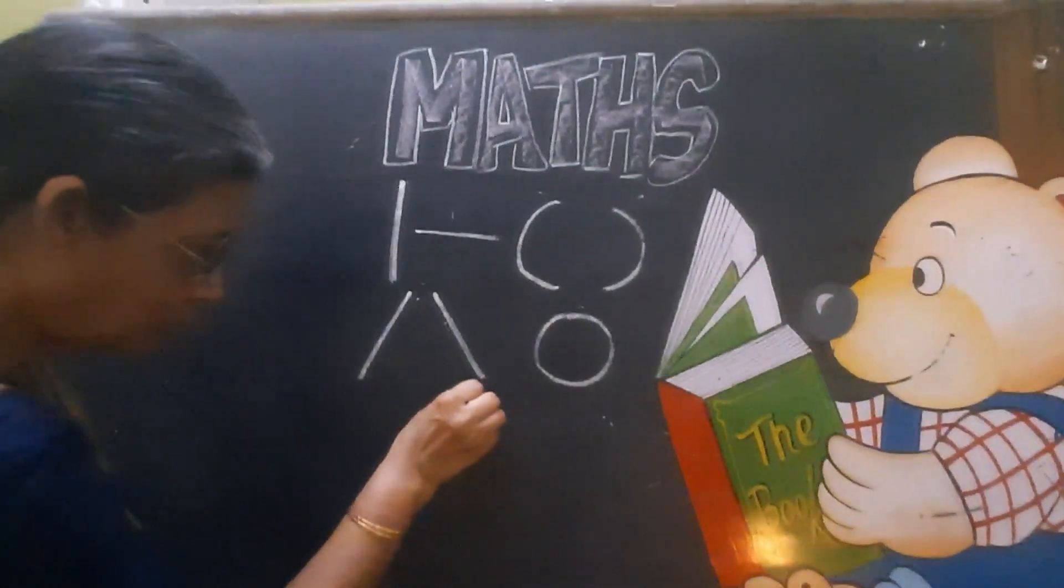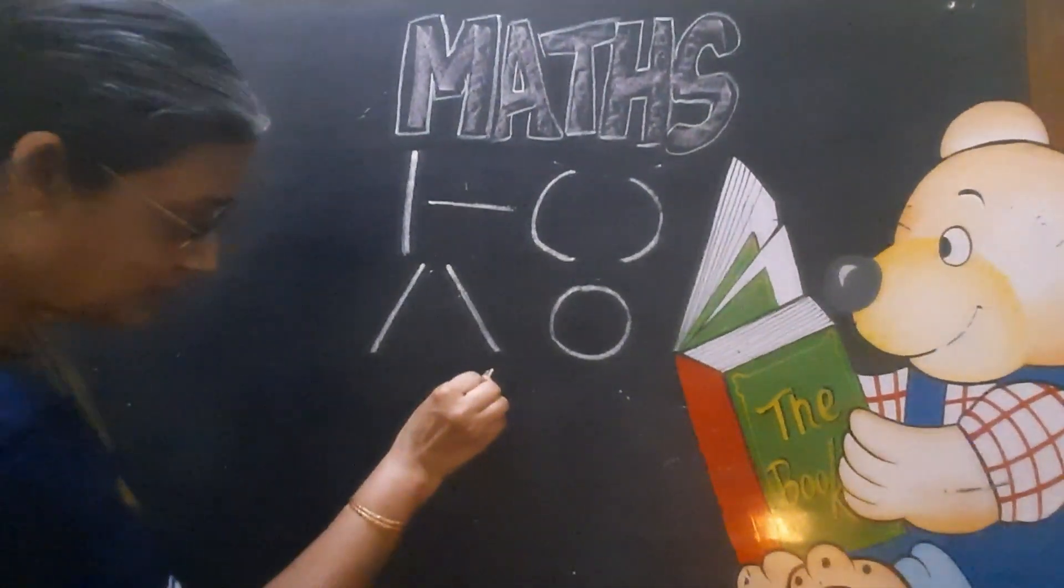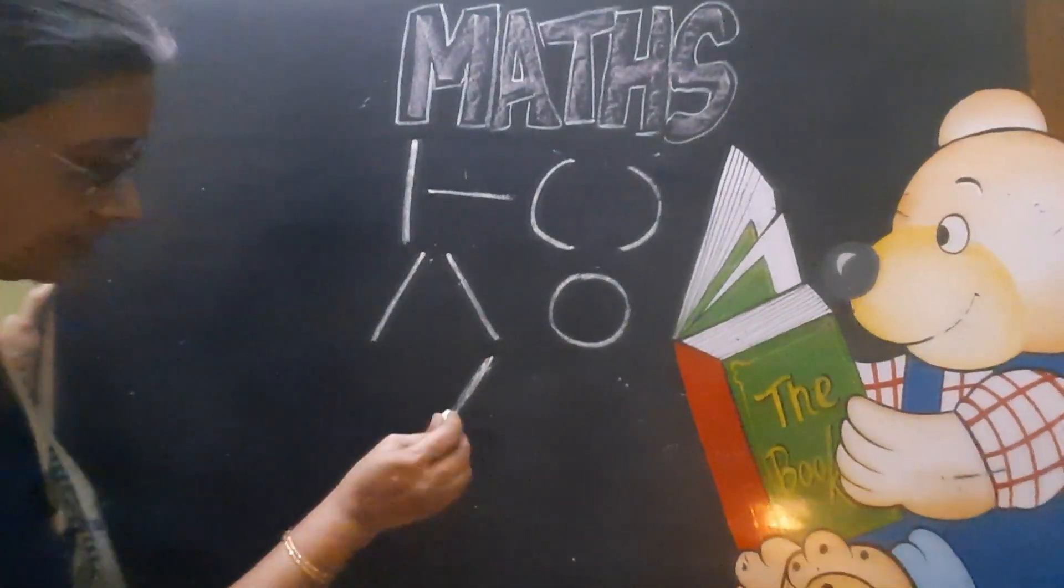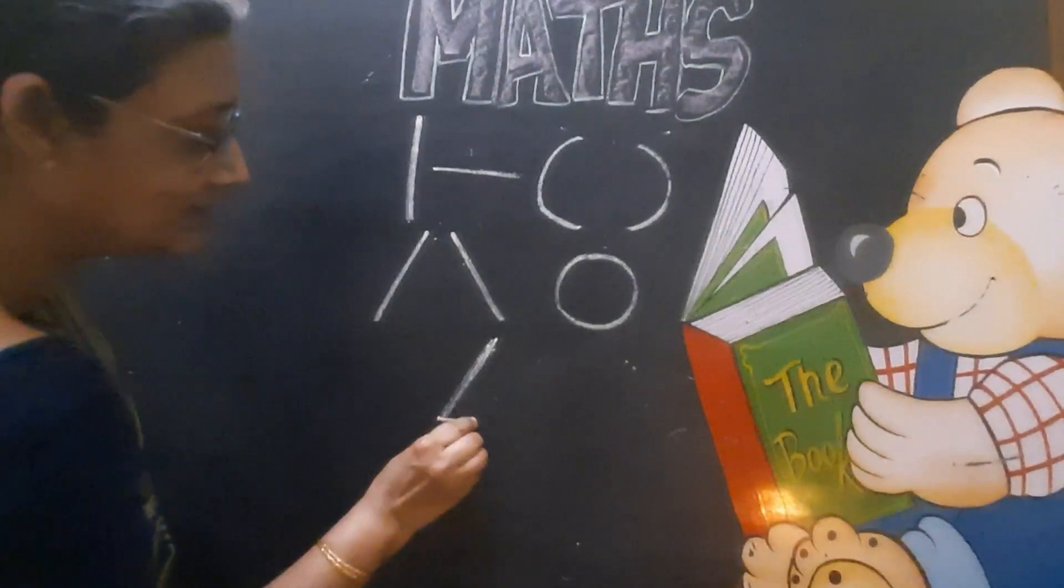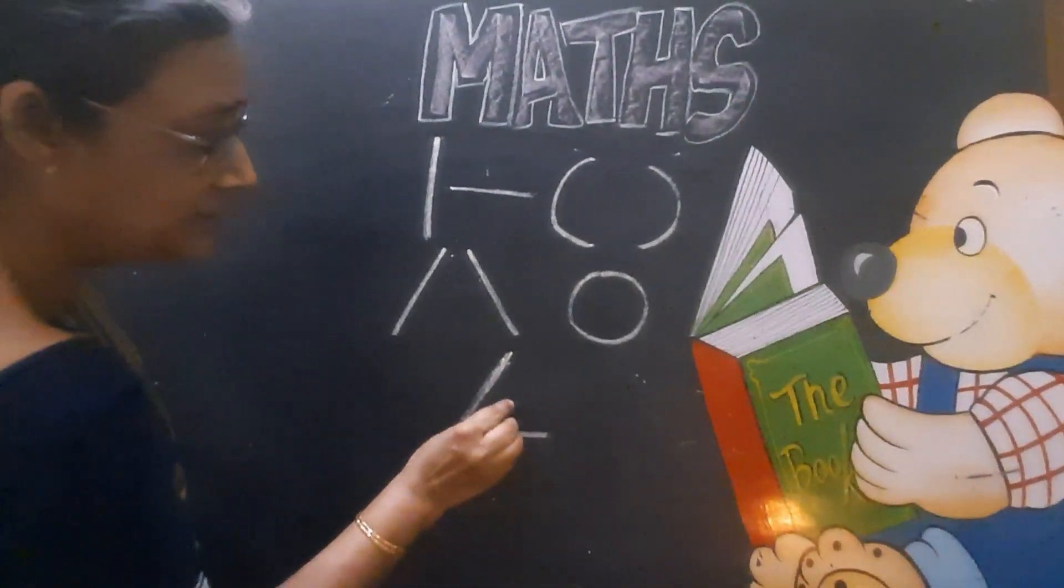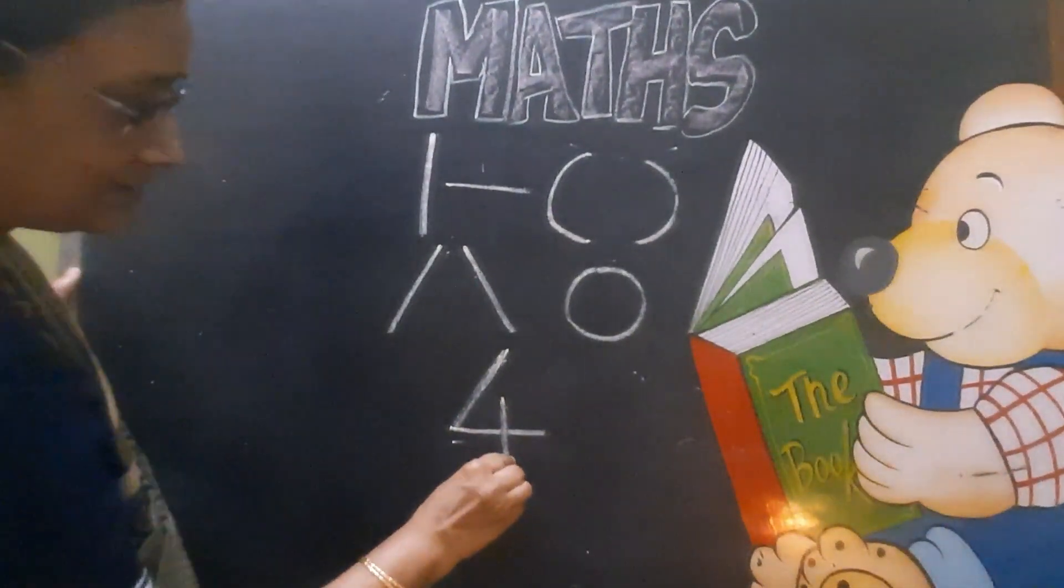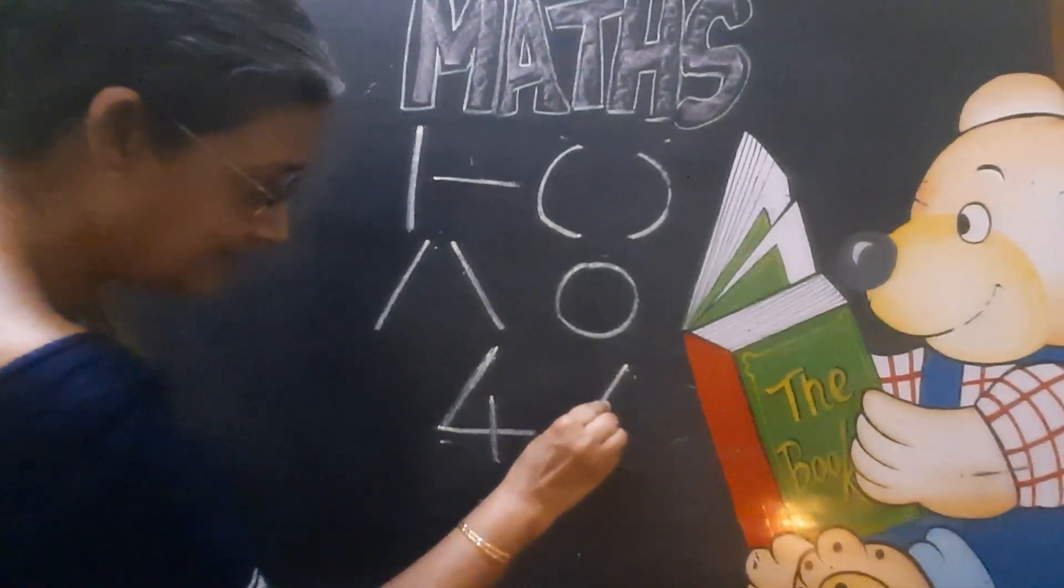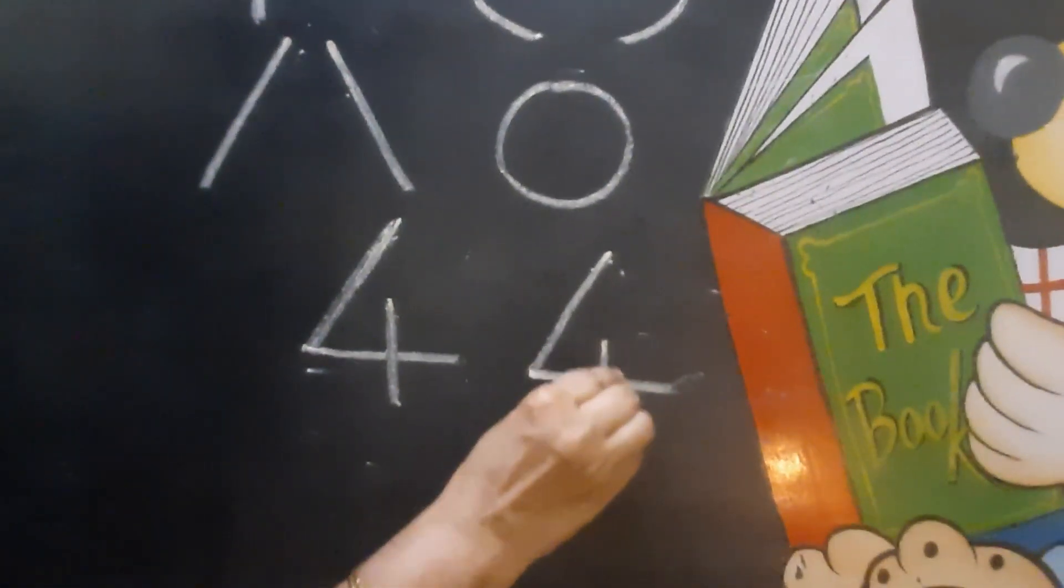First we draw a slanting line. Then from here we make a slipping line. Then from here we make a small standing line. Slanting line, slipping line, standing line.